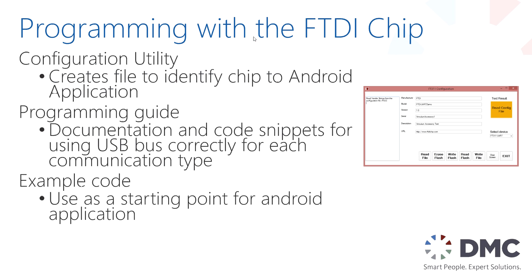Once you've incorporated this into your design, actually programming and utilizing it is even simpler. They provide a configuration utility that allows you to set up the chip on your board. This mainly gives it identification information so that when you connect it to your Android device, you can identify which accessory was connected and launch the correct program on the phone or tablet. FTDI also provides a programming guide with different code snippets, documentation on their API for communicating with their chips, and example projects and code to get you started.